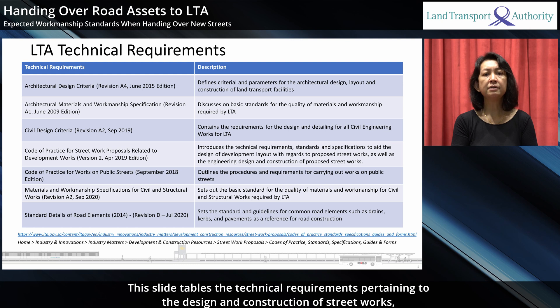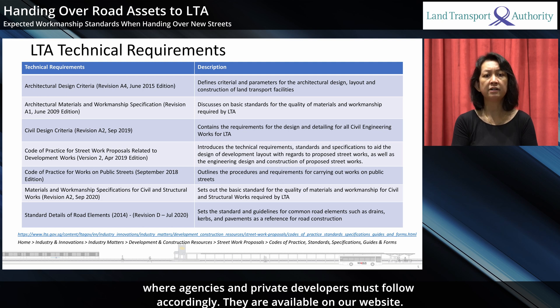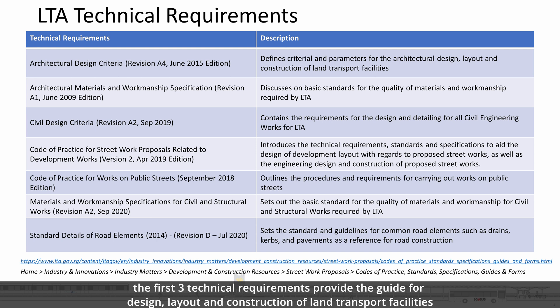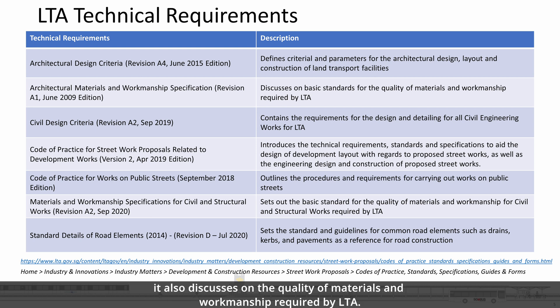This slide tables the technical requirements pertaining to the design and construction of street works, where agencies and private developers must follow accordingly. They are available on our website. In brief, on architectural and civil aspects, the first three technical requirements provide the guide for design, layout and construction of land transport facilities.